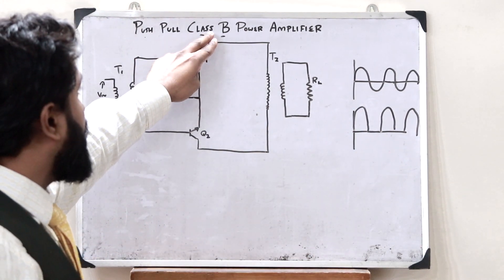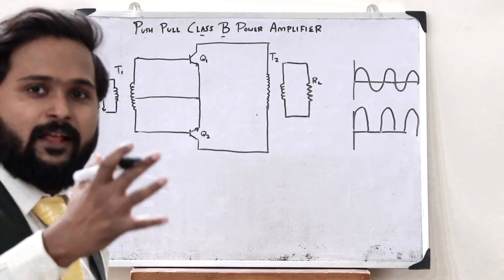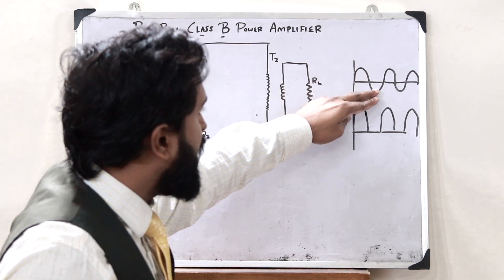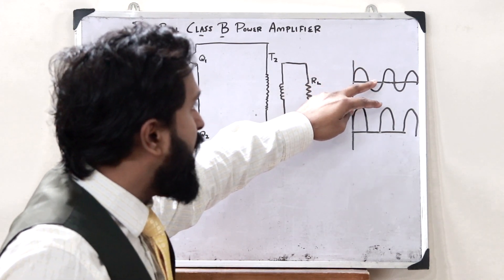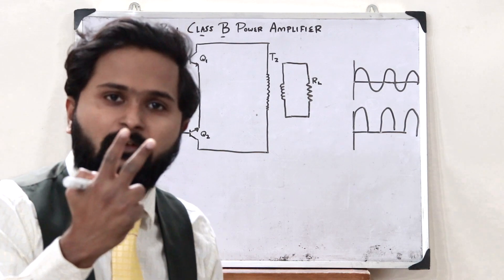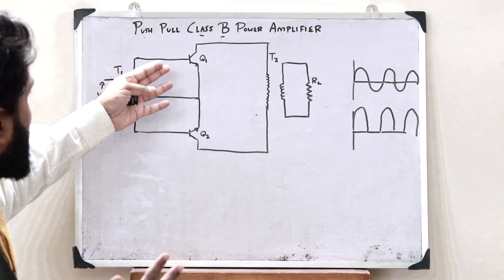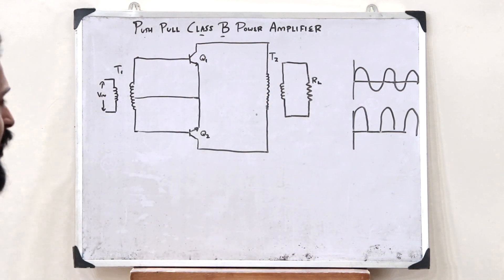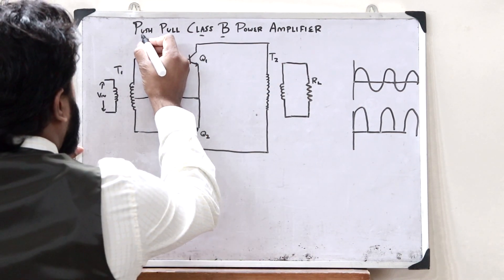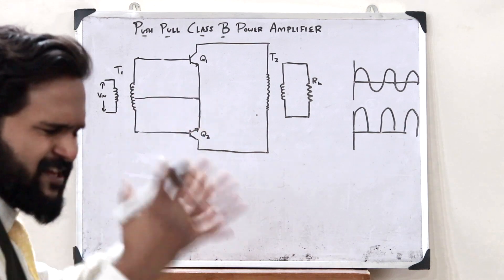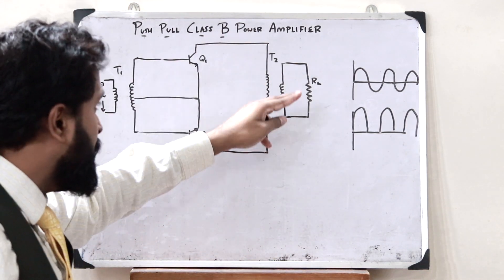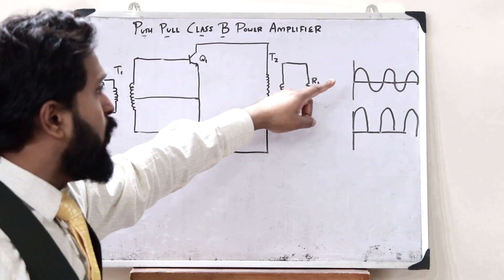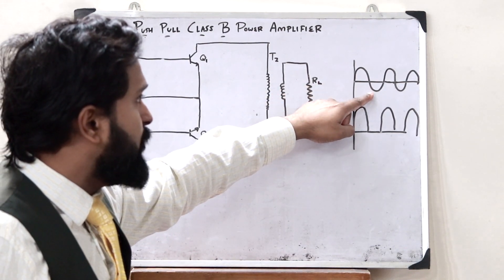That is simply what you call a class B power amplifier. Therefore, in order to get an output for both halves of the input — that is, for the positive half as well as the negative half — we use two transistors. This is simply what you refer to as a push-pull class B power amplifier: a class B power amplifier that uses two transistors so that we get an output for both input halves.